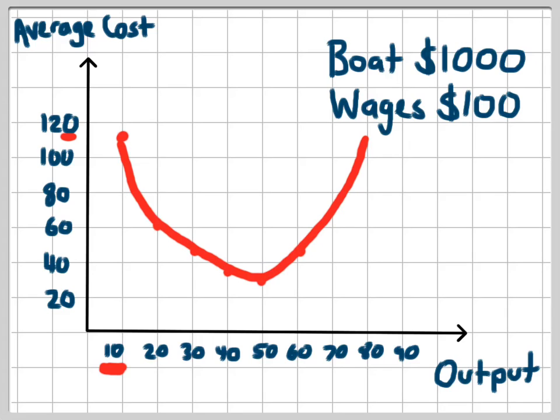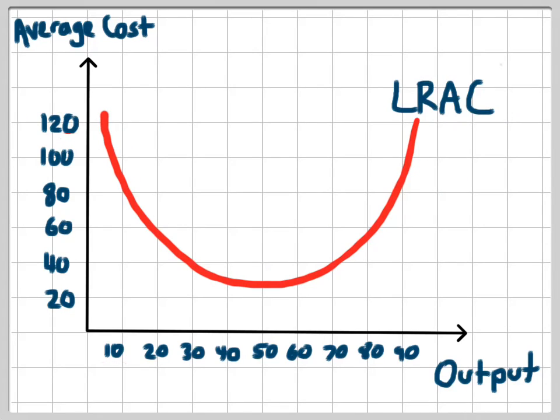When we connect the dots we end up with a long run average cost curve which is a U shape. And this is typically what a long run average cost curve will look like. So we've shown how a long run average cost curve is constructed and we found out that the general shape of the long run average cost curve is a U shape.